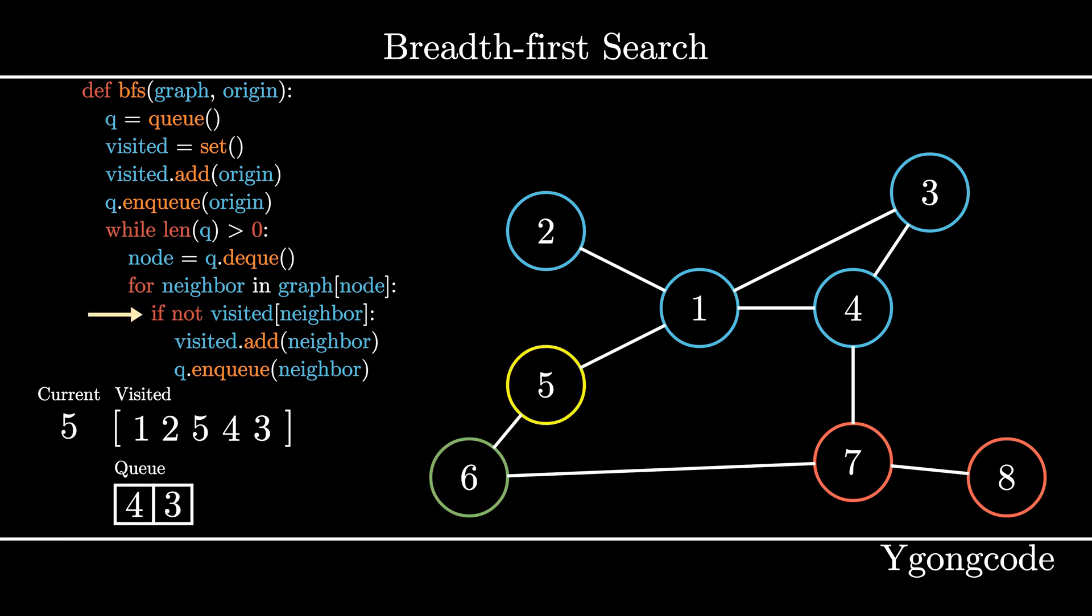We see that 5 only has one neighbor, the node 6, so we will mark 6 as visited and add it to the queue. We then move on to the next node in the queue, which is 4. We see that 4 has one neighbor, the node 7, so we mark 7 as visited and add it to the queue.